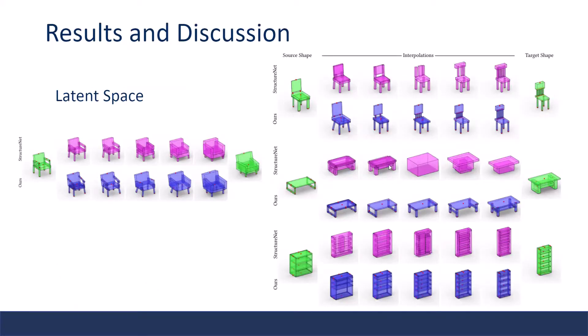This figure shows the smoothness of the latent space. The interpolation demonstrates both geometrically smooth and semantically consistent transitions. Notice that in this line, the surface of the trapback in the source shape gradually shrinks vertically until in the target shape it is just a horizontal bar, and at the same time, the number of vertical slats in the trapback gradually increases from 2 to 5. The interpolation of StructureNet seems more discontinuous.